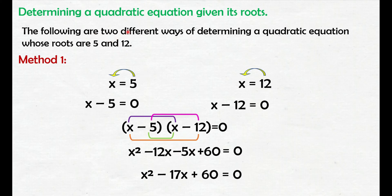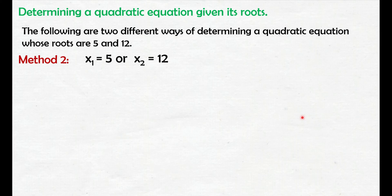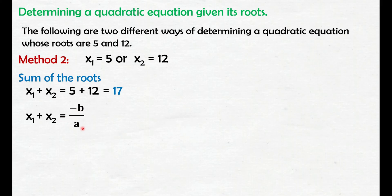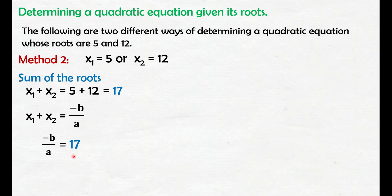Given the two roots, we just reversed the process of solving the roots of a quadratic equation, and we obtained the quadratic equation given its roots. That is Method 1. For Method 2, given x sub 1 equals 5 and x sub 2 equals 12, first solve the sum of the roots: 5 plus 12 is 17. From the formula, x sub 1 plus x sub 2 equals negative b over a, so negative b over a equals 17. Multiplying both sides by negative 1, b over a equals negative 17.